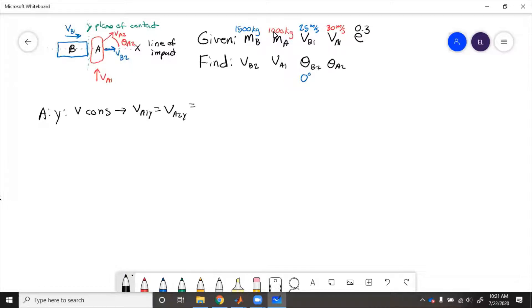All right. So now we put these numbers in, VA1Y equals VA2Y, and that is going to be, well, VA1 was only going in the y direction, so that's going to be 30 meters per second, because it was only going in the y direction. Now for B, VBY equals 0. B was only going horizontal.